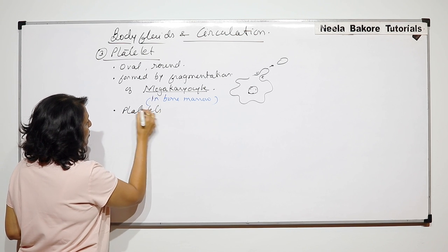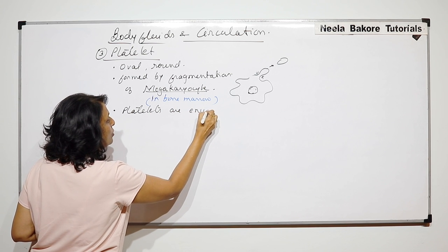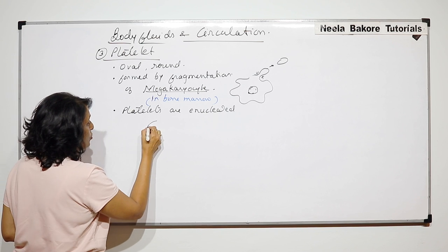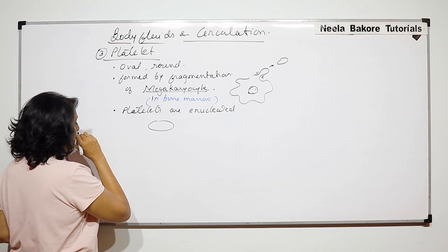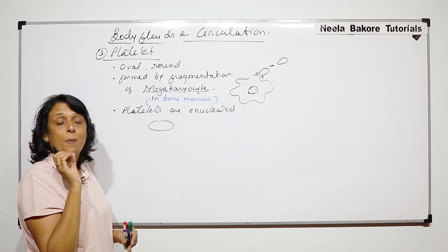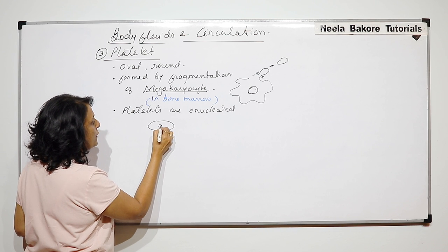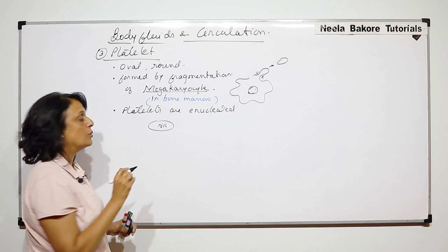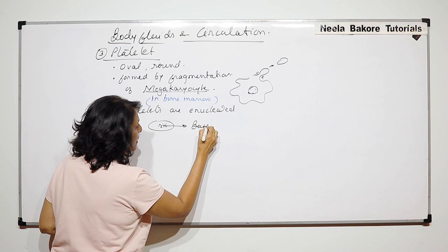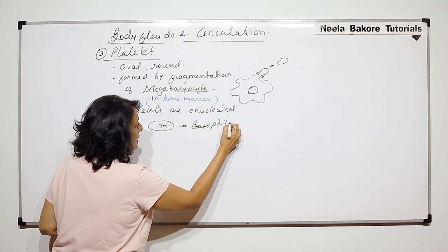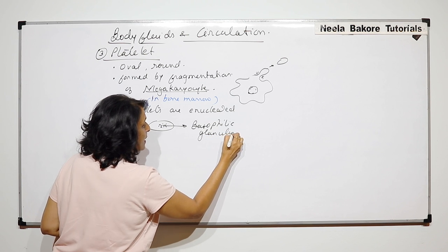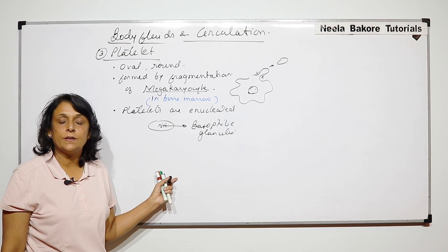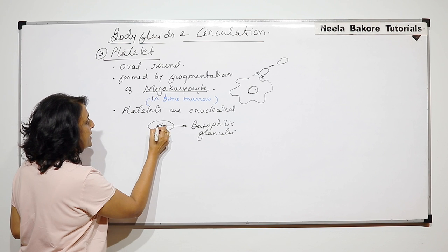So platelets are enucleated — they are only cytoplasm. But in the center part of the cytoplasm, there are some basophilic granules which are densely packed. The center contains these basophilic granules.